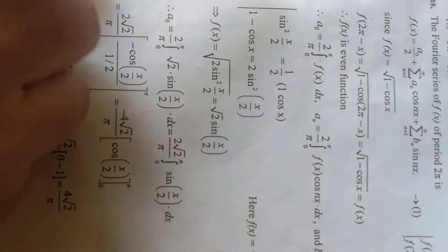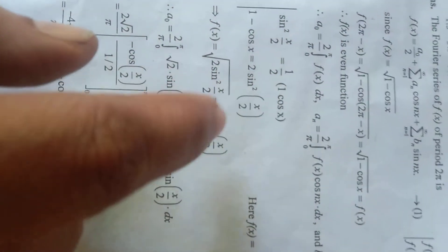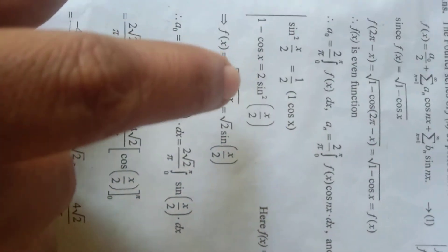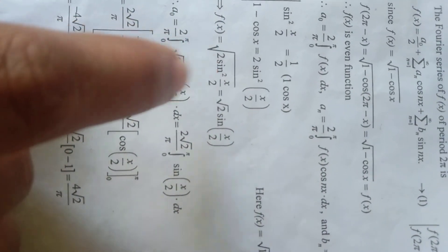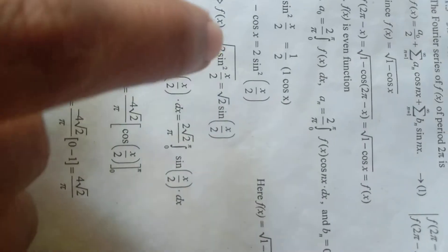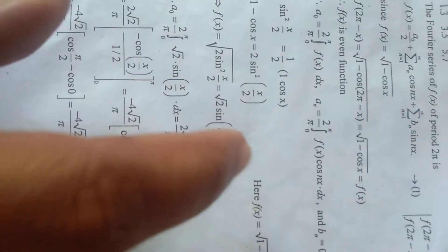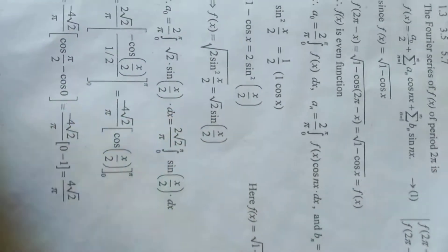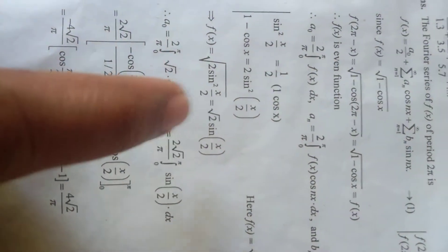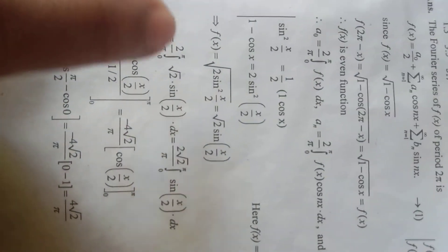Using the identity sin squared x by 2 equals 1 by 2 into cos x, so 1 minus cos x equals 2 sin squared x by 2. Hence f of x equals square root of 1 minus cos x. Using that, f of x equals square root of 2 into sin squared x by 2. Taking 2 outside the square root, and since the square root and square cancel, we get square root of 2 into sin x by 2.